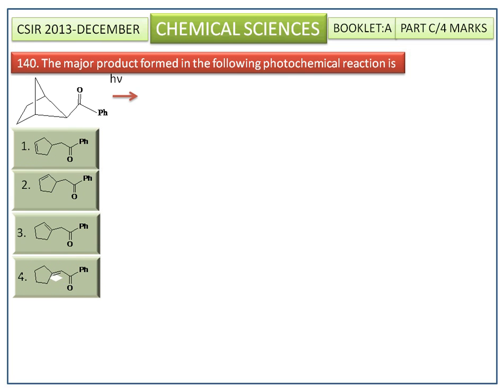Now we see the Norrish Type 2 reaction. Simply, we can say it is cleavage of the beta bond to the carbonyl group accompanied by intramolecular hydrogen abstraction.